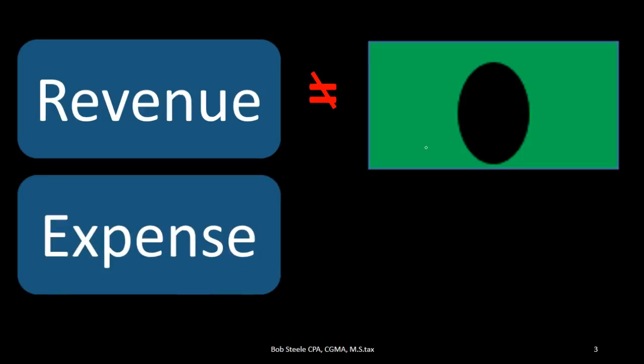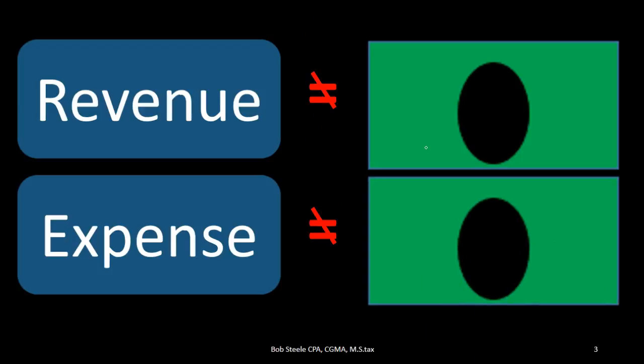On the expense side, same type of thing. Expenses — things like utilities, meals and entertainment, wages — that's not the same thing as cash. We're going to pay with cash eventually, but the point in time that we consume those expenses is really when the expense happens. Under an accrual method, we want to look for that point in time specifically — be more precise about when it occurs. Under a cash method, we say the smoke is close enough to the fire when the cash happens, and that's close enough for us to record the expense at that point in time.